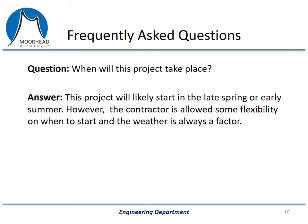Now that I've explained how the city determines which projects to do and shown you the type of work we're proposing to do in your neighborhood, I'm going to go through several frequently asked questions. The first question: when will this project take place? Generally, these projects start early spring or early summer — so May, June, sometimes as early as April. The contractor is generally given some flexibility on when they start and when they finish, and the weather is a factor too. Generally, we'd say May to June.